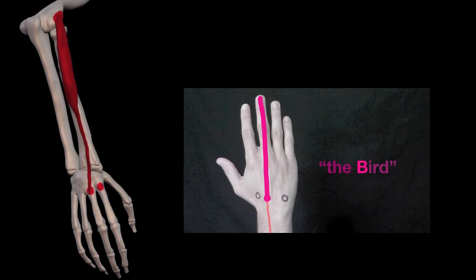To tell the difference between the two, we use the mnemonics we already covered in a previous video. This muscle attaches to the base of the middle finger, the finger used for the bird. B for bird equals B for brevis.